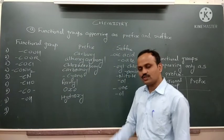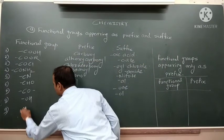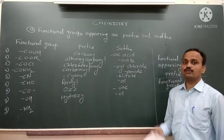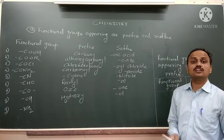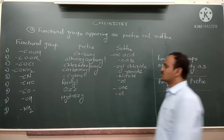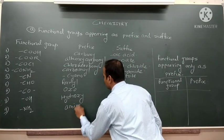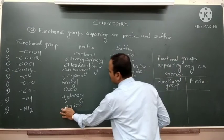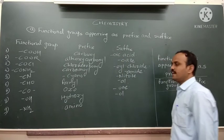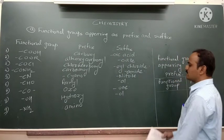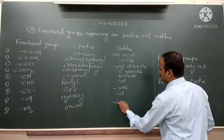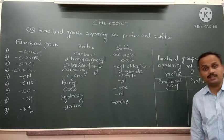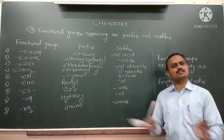The last functional group in this group is the amine functional group, –NH₂. When the amine functional group comes as a substituent, it is called 'amino'. When it acts as a parent, it is called '-amine'. Examples include methanamine, propanamine, and ethanamine.